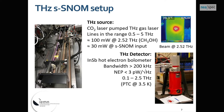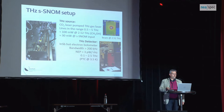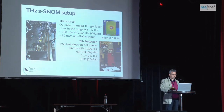To extend the system into the Terahertz, we acquired a gas laser from Edinburgh Instruments. It is a CO2-laser-pumped Terahertz gas laser, providing several lines between 0.5 and 5 Terahertz. We have around 100 milliwatts at the laser output, and approximately 30 milliwatts at the SNOM input after coupling losses. As a detector, we use an indium antimonide QMC hot electron bolometer with a bandwidth larger than 200 kHz, cooled with a pulse tube cooler at 3.5 Kelvin.